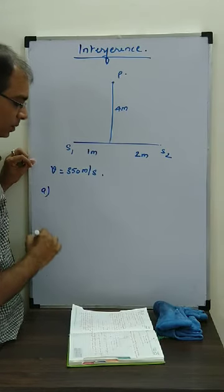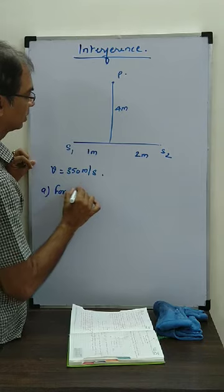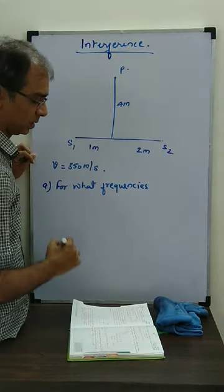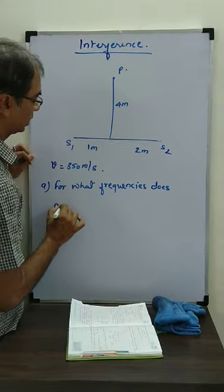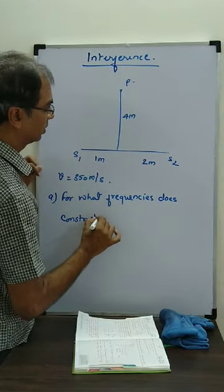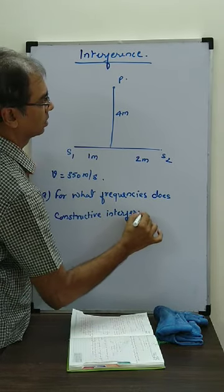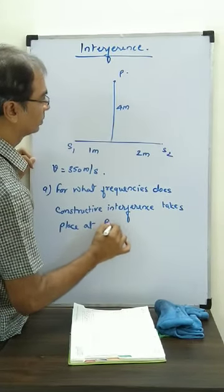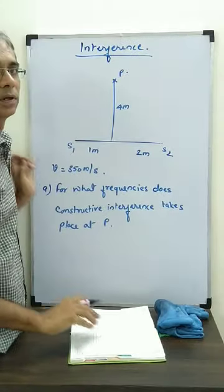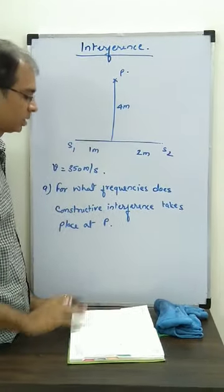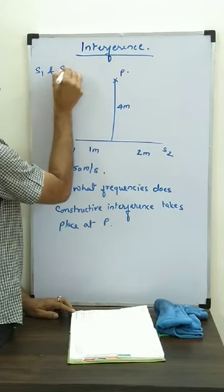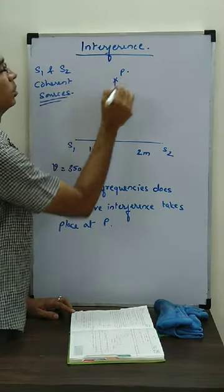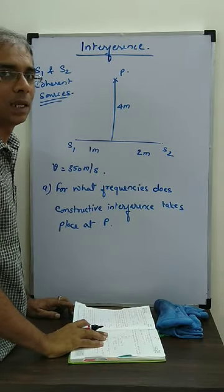The question is asking: for what frequencies does constructive interference take place at P? First thing is, are the sources coherent? Yes, S1 and S2 are coherent sources. Then only we can say that constructive interference is happening at P and it will remain so — it will be sustained interference. So we want constructive interference. Now what is the condition for constructive interference? The phase difference between the two waves reaching from two sources should be 0, or 2 pi, 4 pi, 6 pi.